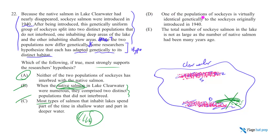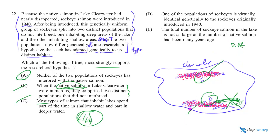Answer D is interesting. One of the sockeye populations is virtually identical genetically to the sockeye originally introduced. We already know the two populations are genetically distinct — D is just telling us one of them didn't change, so only the other one changed. But that tells me nothing about why they're different. Genetically distinct could have occurred in many ways: both groups could have changed, or one stayed constant and the other changed any which way. You're just saying one remained constant — you still can't explain why they're different. D does absolutely nothing.